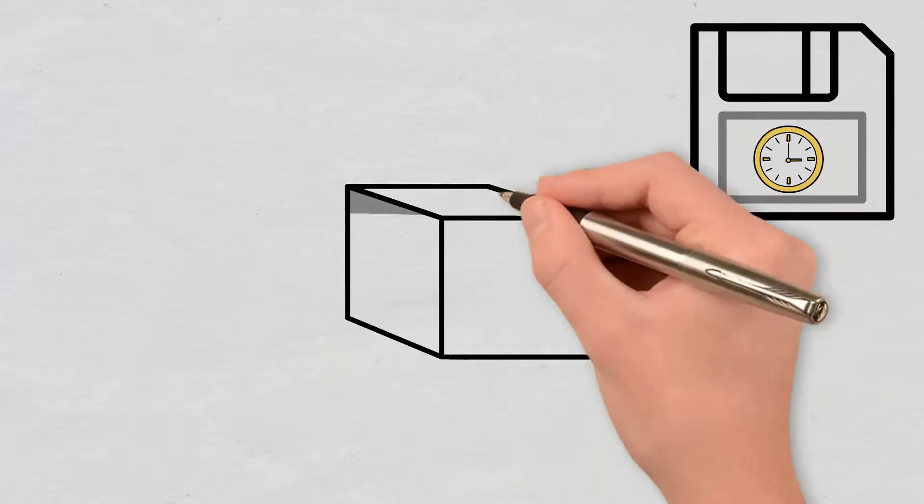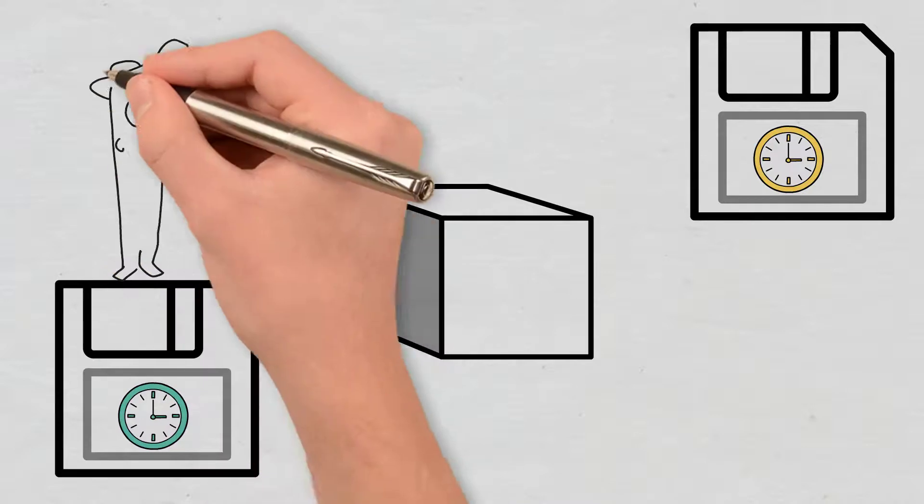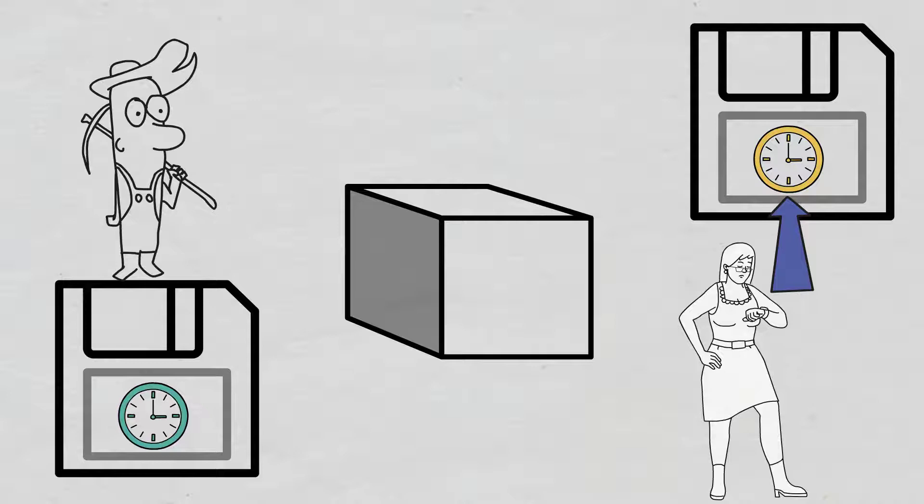So, whenever a Bitcoin block is generated, there are two timestamps. One of them is in the block header, which is placed by the miner, and the other one is the actual time when the block is created.